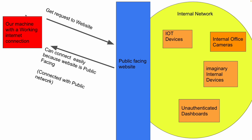For better explanation, I've created this slide. Let's assume this is our machine and we are sending a GET request to a public-facing website. A public-facing website is connected to the internet and is also part of the internal network infrastructure. In this internal network there can be tons of devices — IoT devices, unauthenticated dashboards on some IP address — because the internal network is usually a lot more vulnerable, since it is assumed no outsider can access it.